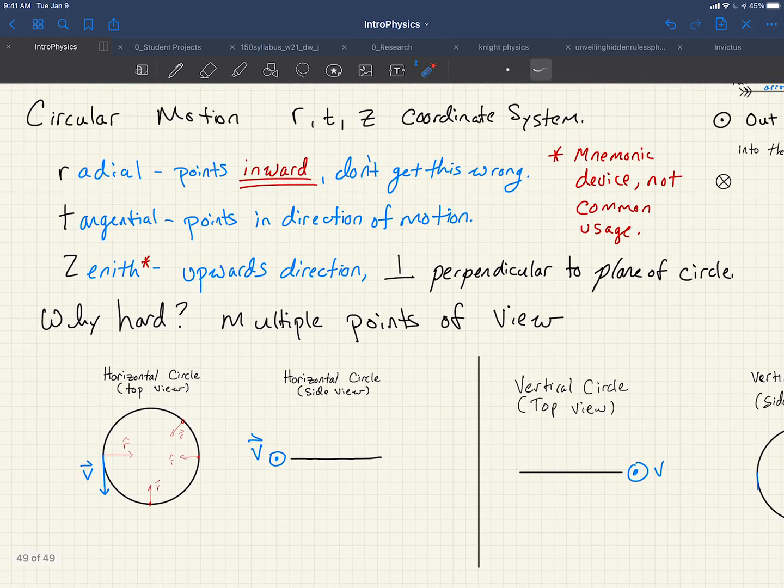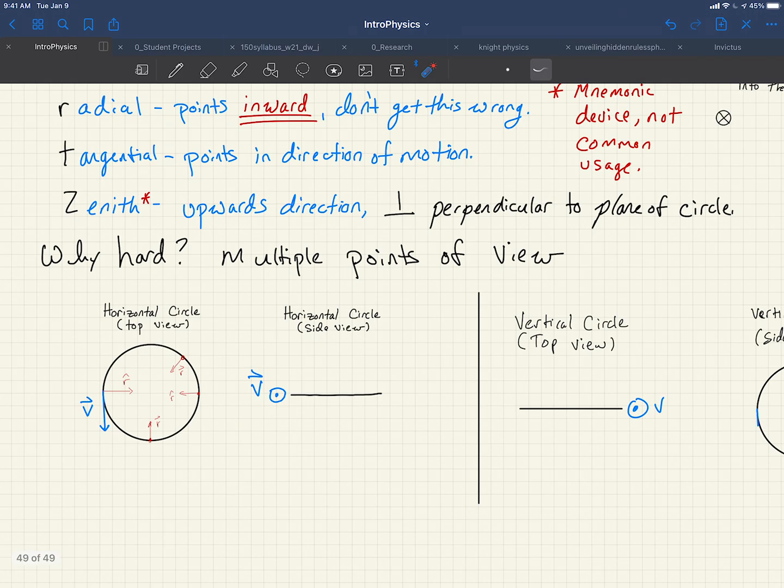Alright, so what's the next part of RTZ? Tangential. So tangential we always take to be in the direction of motion. So here we see the object is moving this way. We'll make that our tangential direction, so that'll be T.